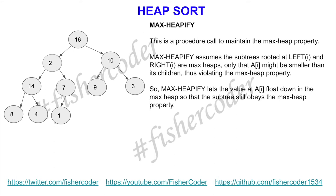What max heapify does is let the value at A[i] float down gradually in the max heap so that the subtree still obeys the max heap property. Looking at this simple binary tree: the node with value 2 is smaller than both of its left and right children, so it's not a valid max heap. We move 2 down — assuming both subtrees are valid max heaps, which is true here. We call max heapify and 2 is switched down.